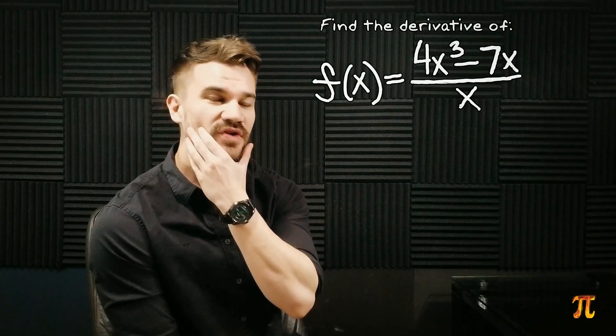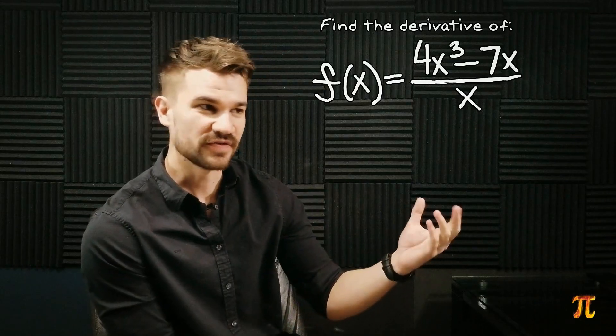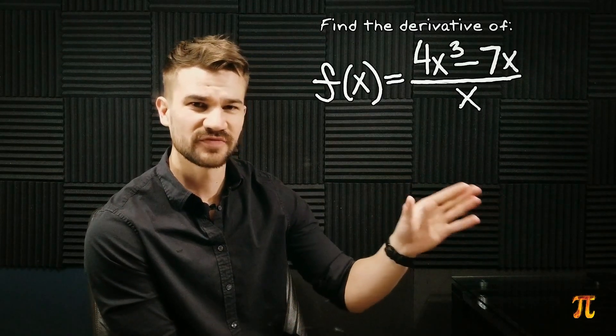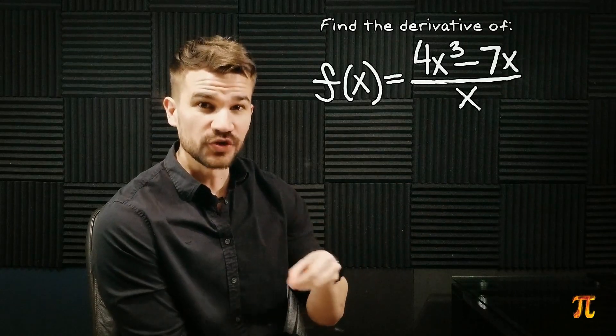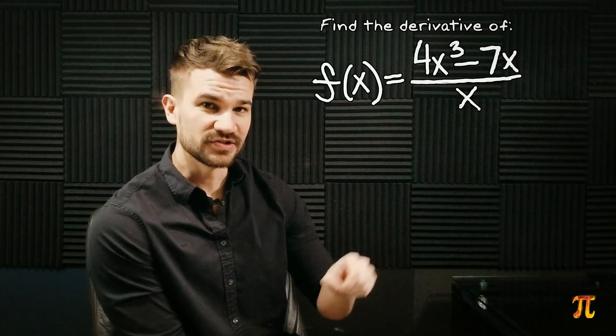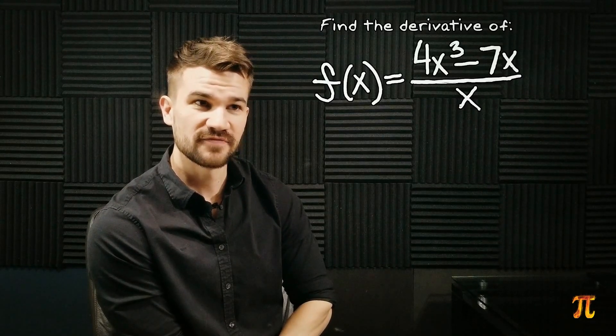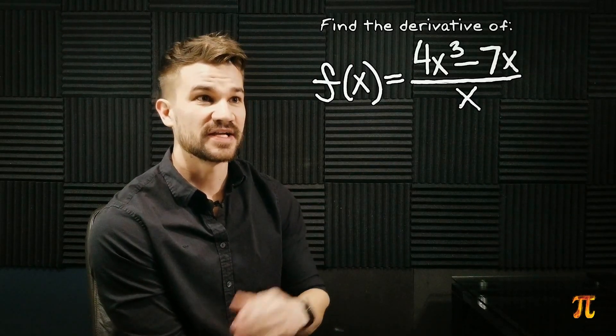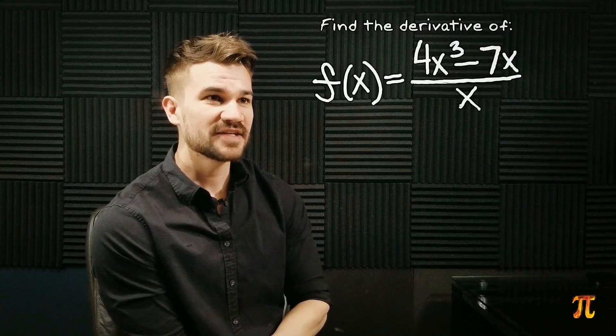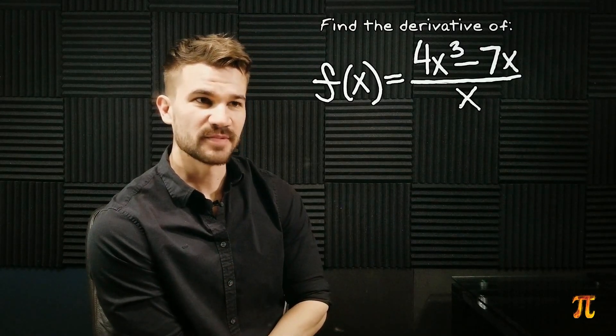You see whether or not a function is a quotient of functions or a product of functions or a sum of functions, it's in a way a point of view we take to our advantage. And in this case I would say there's a better way to do this rather than viewing this as a quotient of functions and using the quotient rule, and that is just to algebraically switch it up a bit.